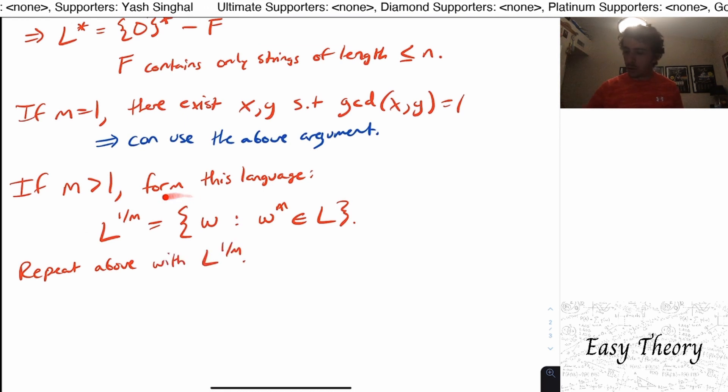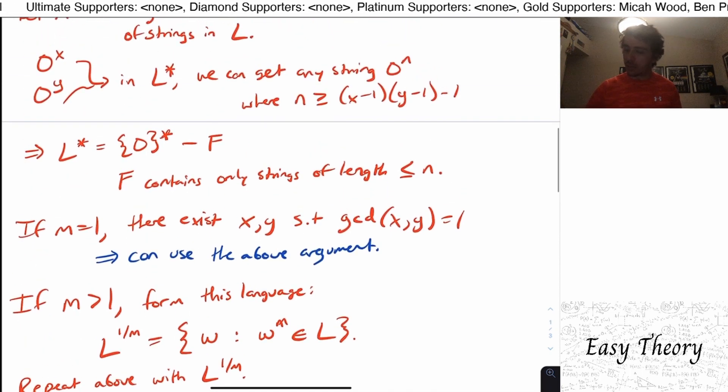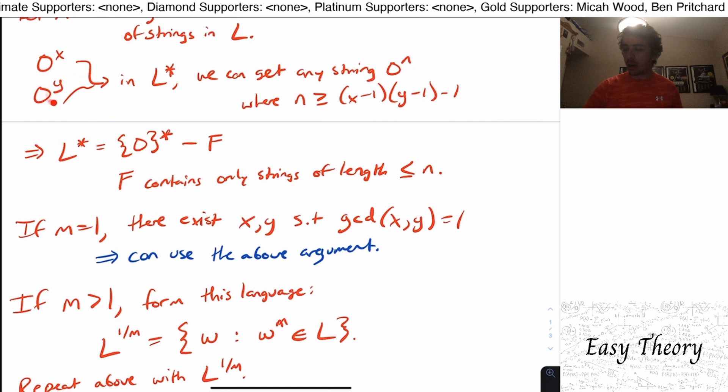So then what we can do is to repeat the above procedure with L to the power of one over M. And if there still happens to be a GCD in here, then I'm just going to repeat this. At some point, we're going to have a GCD of one, then we're going to find two strings that are relatively prime to each other. And then we can apply this argument as before.